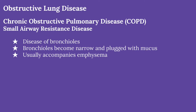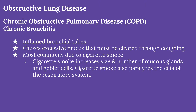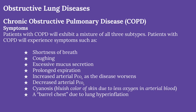Small airway resistance disease is a condition in which the bronchioles become narrowed and plugged with mucus, and usually follows emphysema. Chronic bronchitis causes inflammation of the bronchial tubes — 'bronch' meaning bronchi and 'itis' meaning inflammation. It causes the patient to produce an excessive amount of mucus that must be cleared by coughing, mainly caused by cigarette smoke, which increases the size and number of mucus glands and goblet cells. Cigarette smoke also paralyzes the cilia of the respiratory epithelium, which normally filters inhaled air. Patients with COPD usually experience a mixture of all three subtypes.